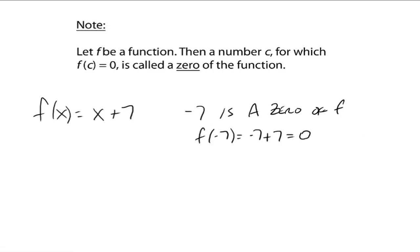Okay? Alright, I'll do one more. What if g(x) was equal to x² - 9? Alright, so 3 and -3 are zeros of g.